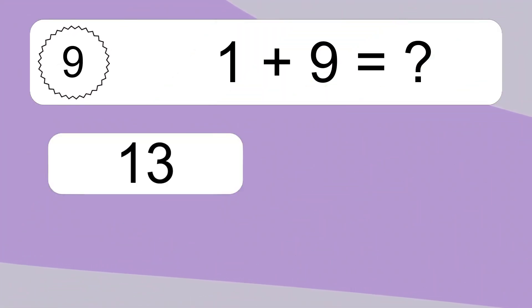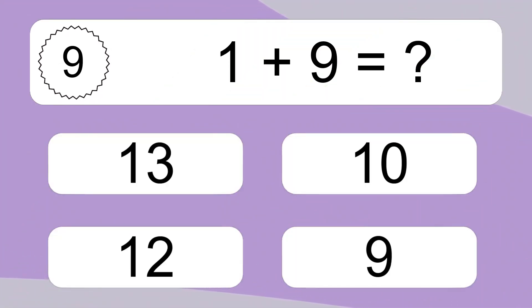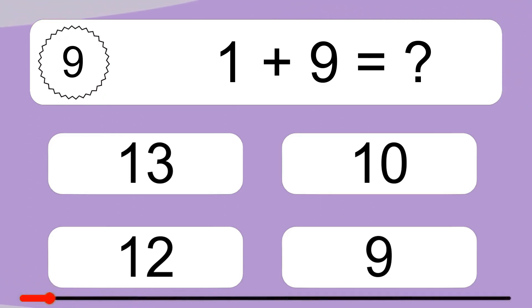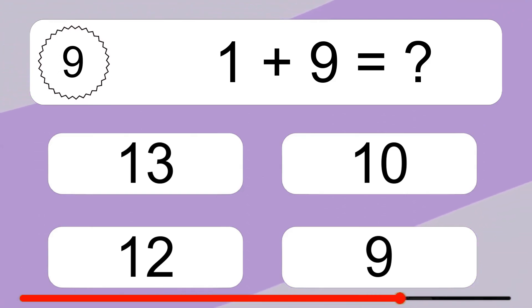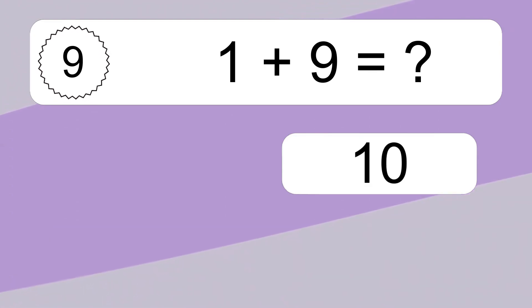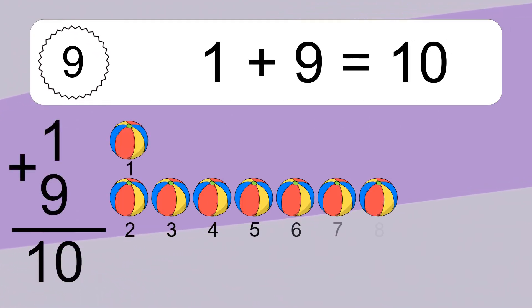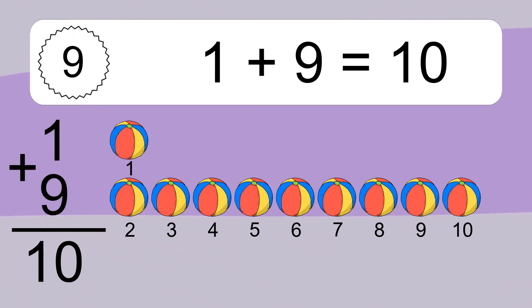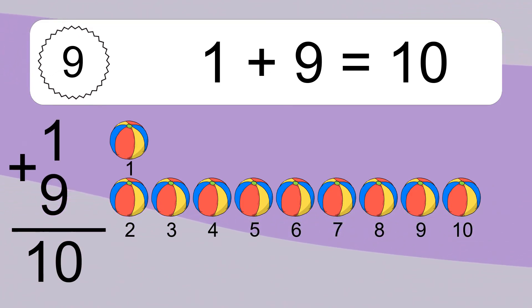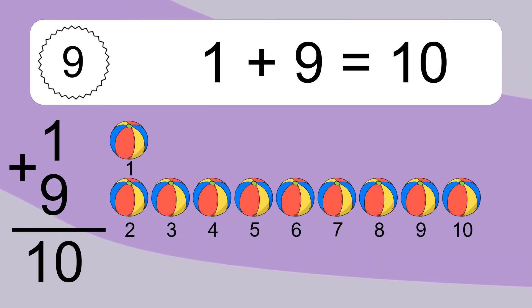1 plus 9 equals what? 1 plus 9 equals 10. Let's count it. 1, 2, 3, 4, 5, 6, 7, 8, 9, 10.